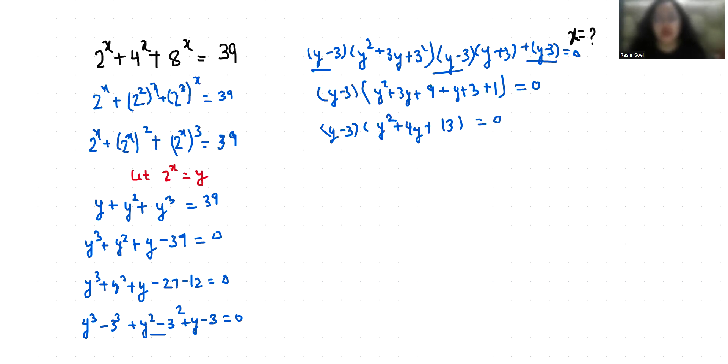So y - 3 = 0, thus y = 3, and y² + 4y + 13 = 0.